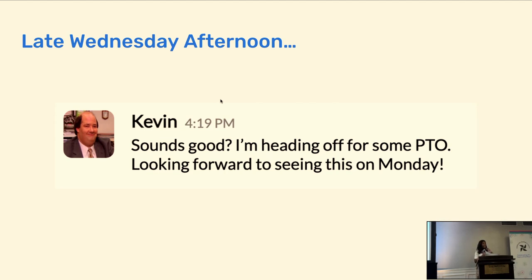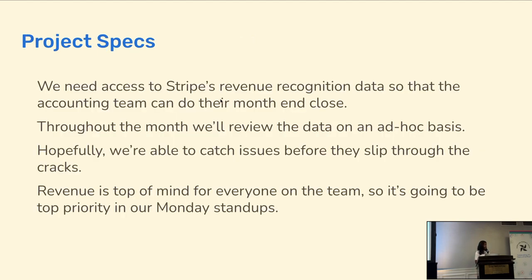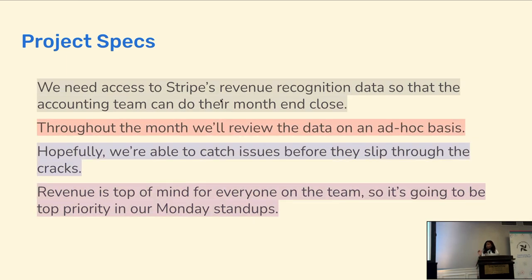Before you freak out because you can't ask Kevin all the questions you need, you go back to his last message. He said they need to access Stripe revenue recognition data, they'll review it throughout the month, they want to catch issues before they go on too long, revenue is top of mind, and they'll review it weekly. Already from this, you can see that each sentence corresponds to a task, a task group, or an action you can perform in Airflow. We're going to build an MVP Airflow project to solve this use case — and whatever you build at first is not what you use in the end, so it's fine if it isn't perfect.